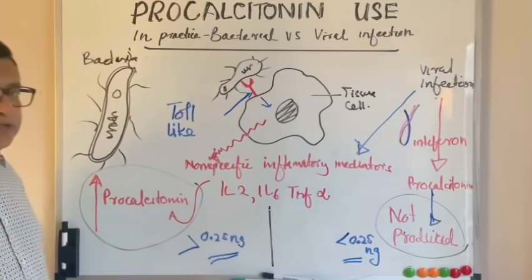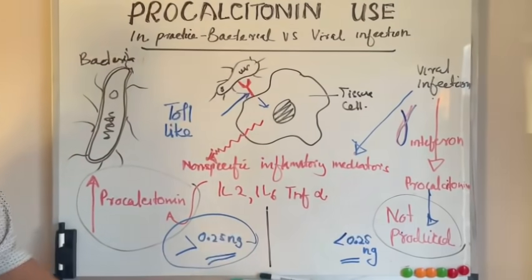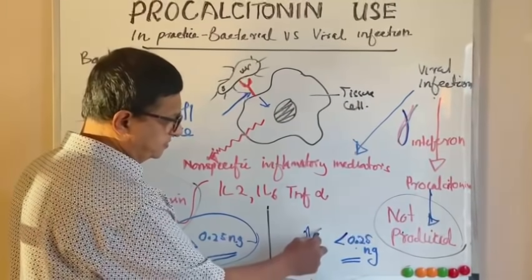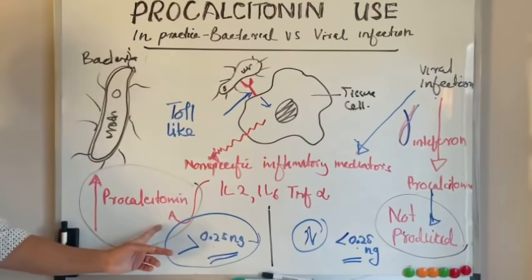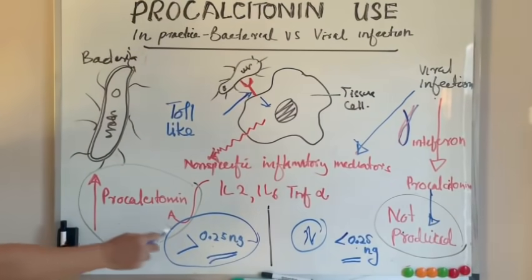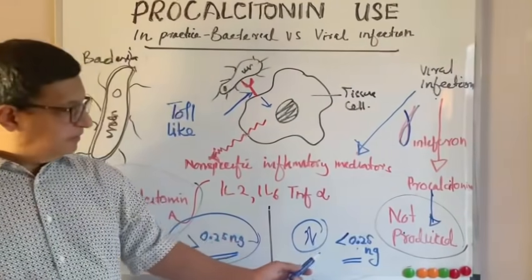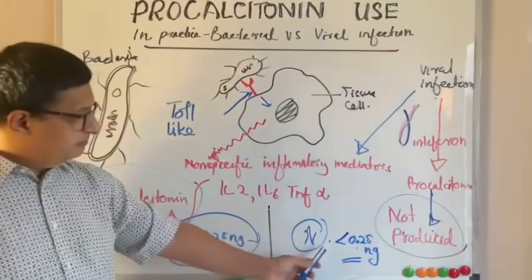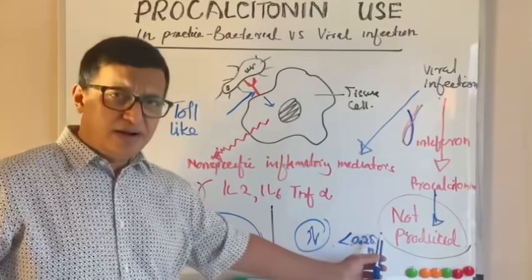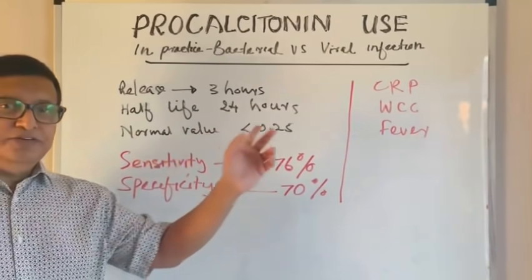When we check procalcitonin levels, in a bacterial infection it is above 0.25 ng/mL. Less than 0.25 is the normal range — the actual baseline is around 0.01, but we regard 0.25 as the normal cutoff. In a viral infection the procalcitonin level remains normal, below 0.25.